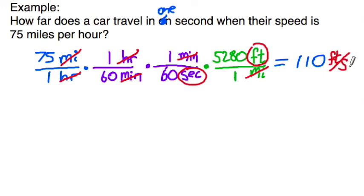So this would be feet per second, 110 feet per second. So the answer to the question is, after one second of traveling at 75 miles per hour, you travel 110 feet.